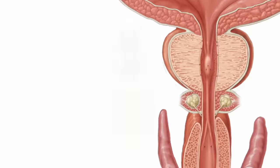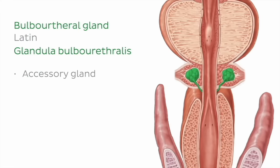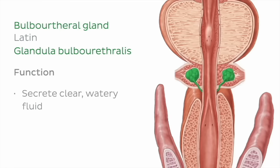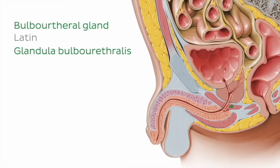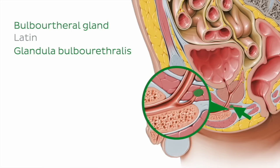Moving on to the prostate's inferior neighbour, we find the third and final pair of accessory glands, the bulbo-urethral glands, also known as the Cowper's glands. These pea-sized glands secrete a clear, watery fluid that lubricates the urethra in preparation for the passage of semen. From this sagittal view, we can see the bulbo-urethral glands located just inferior to the prostate and posterolateral to the intermediate part of the urethra. The bulbo-urethral glands empty into the posterior aspect of the urethra at this point.